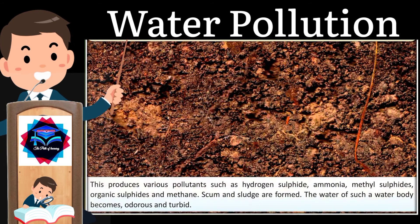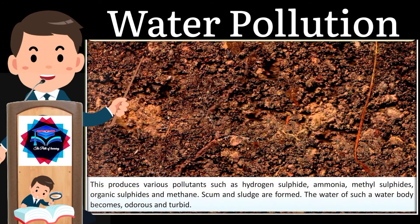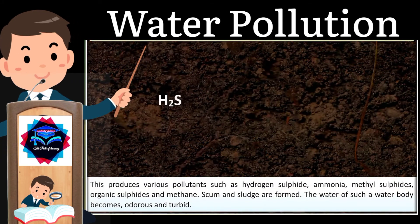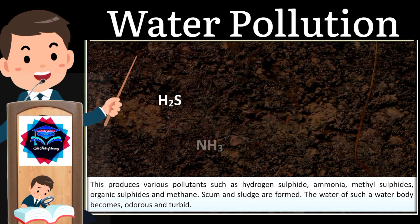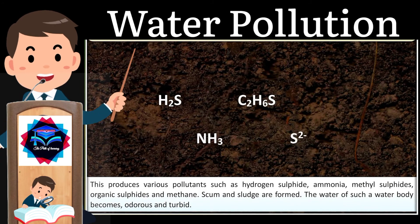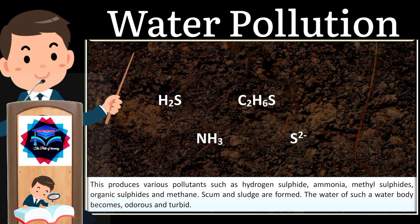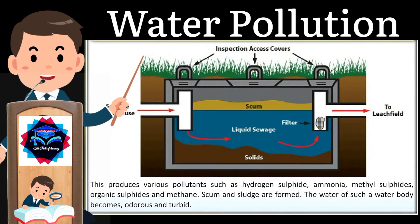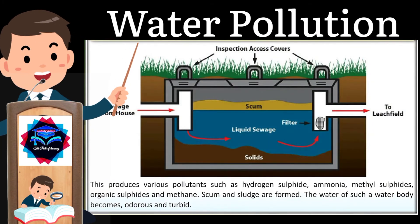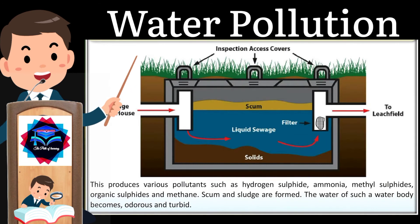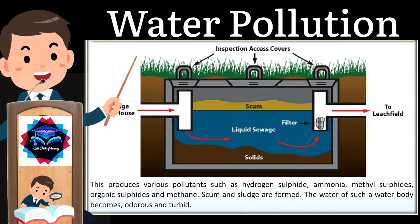Anaerobic breakdown produces various pollutants such as hydrogen sulfide, ammonia, methyl sulfides, organic sulfides, and methane. Scum and sludge are formed, and the water of such a water body becomes odorous and turbid.